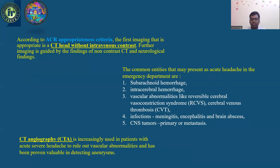Common entities presenting as acute headache in the emergency department include subarachnoid hemorrhage, intracerebral hemorrhage, vascular abnormalities like reversible cerebral vasoconstriction syndrome, cerebral venous thrombosis, infections including meningitis, encephalitis and brain abscess, sinus tumors primary or metastatic. CT angiography is increasingly used in patients with acute severe headache to rule out vascular abnormalities and has been proven valuable in detecting aneurysms.